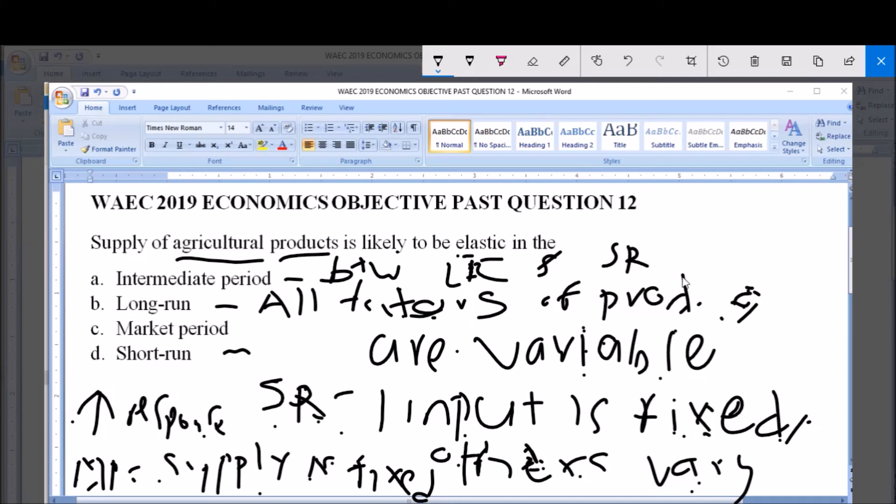Now, during this period, the product elasticity is usually greater than one. And whenever a product elasticity is greater than one, the supply is said to be elastic. So, the answer to the question is option C, which is the market period.